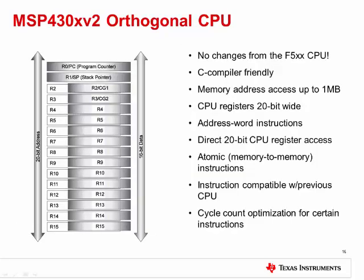The MSP430FR4X and MSP430FR2X are both based on an orthogonal CPU. This is very similar to the MSP430FR5X and MSP430FR59 and FR69 that released earlier this year. A couple key things to remember is that it is an efficient, ultra-low power CPU. In addition, it's C-compiler friendly with clear and easy to understand instructions and addressing modes. Migration is also simple since it's similar to other MSP430 devices.